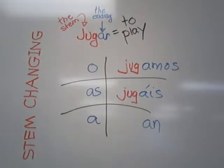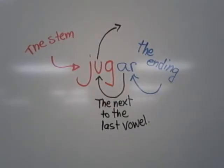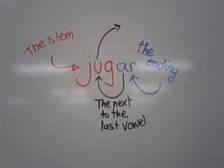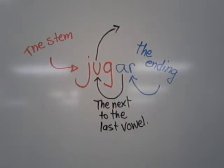The stem is the part that generally does not change, except in stem-changing verbs it changes just a little bit. The stem is j-u-g. The ending is the ar, or the o, as, a, amos, ais, an — which replaces it when you conjugate it.